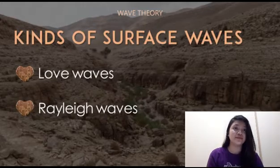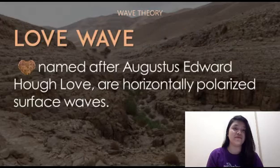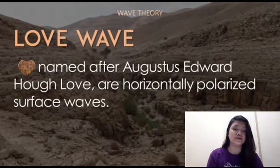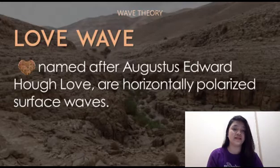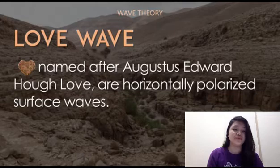There are two kinds of surface waves: the Love wave and the Rayleigh wave. The Love wave is the first kind of surface wave. It is named after A.E.H. Love, a British mathematician who worked out the mathematical model for this kind of wave in 1911. It is the fastest surface wave and moves the ground from side to side, confined to the surface of the crust. Love waves produce entirely horizontal motion.